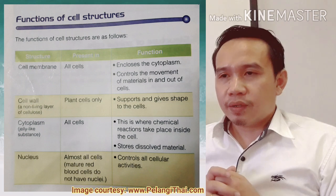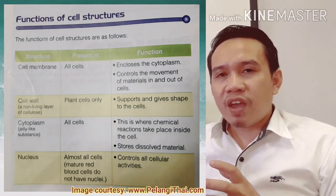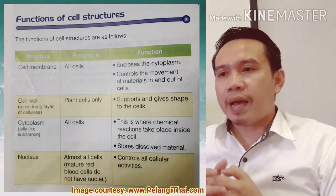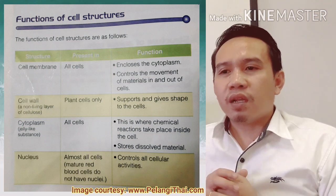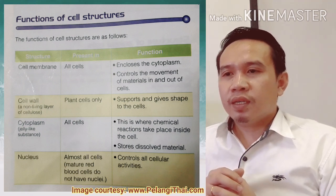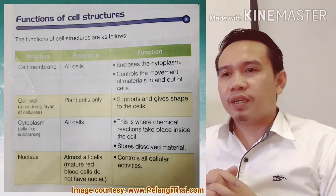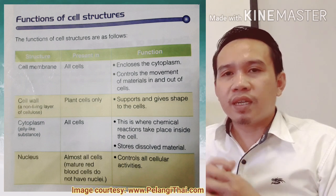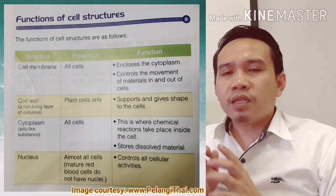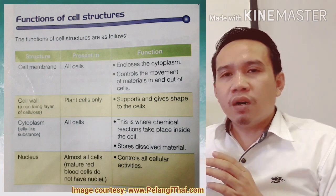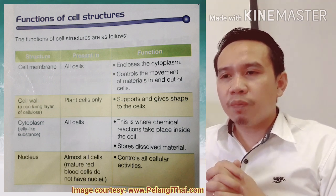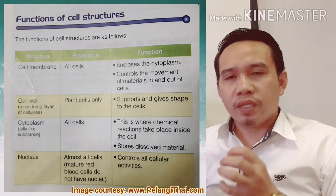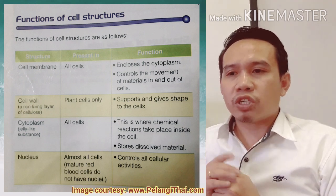Now let's look at the function of cell structures. First, we have the cell membrane — it is present in all cells. Its main function is to enclose the cytoplasm and control the movement of materials in and out of cells. The cell wall is present in all plant cells only; it supports and gives shape to the cell's structure. Cytoplasm is present in all cells — it is where chemical reactions take place inside a cell and where dissolved materials are stored.